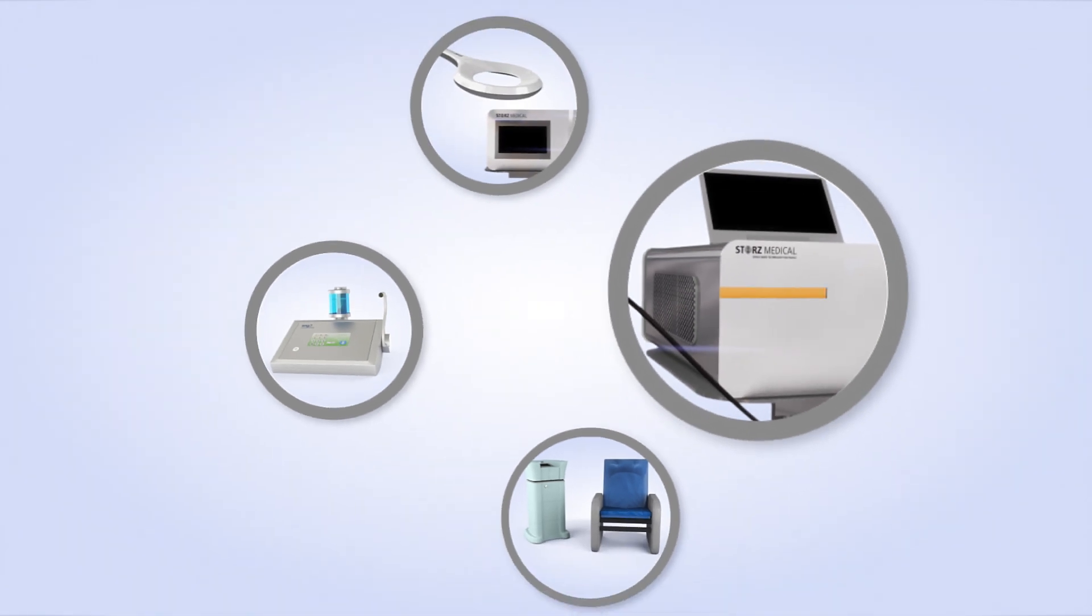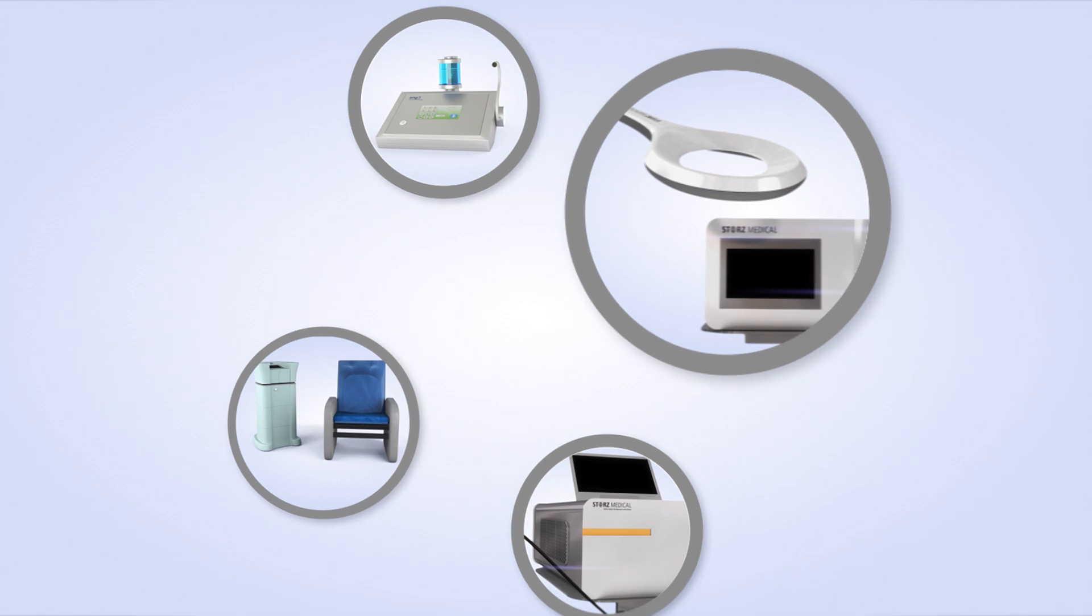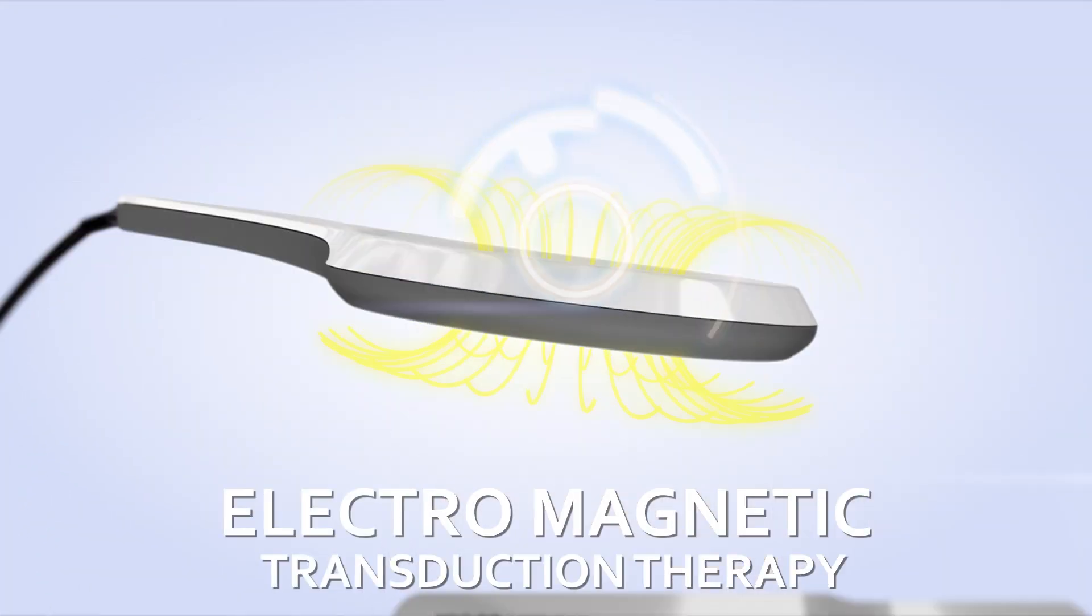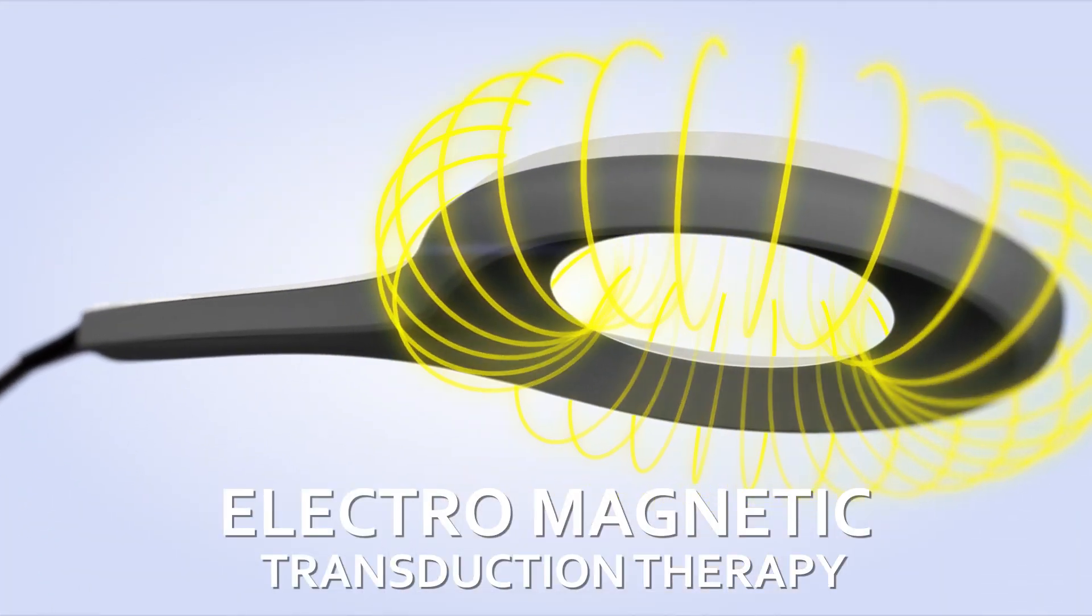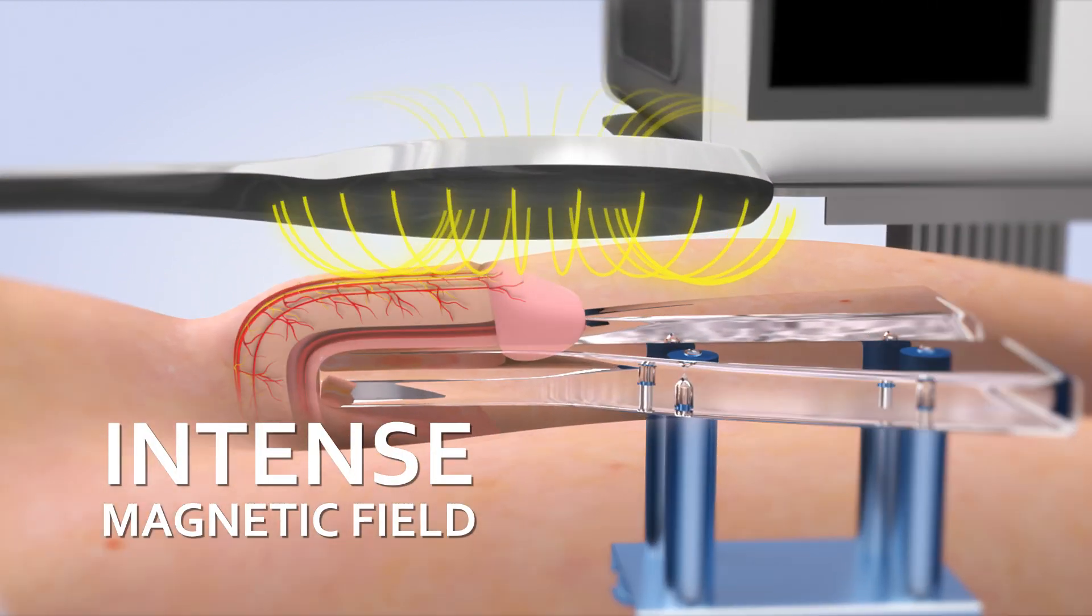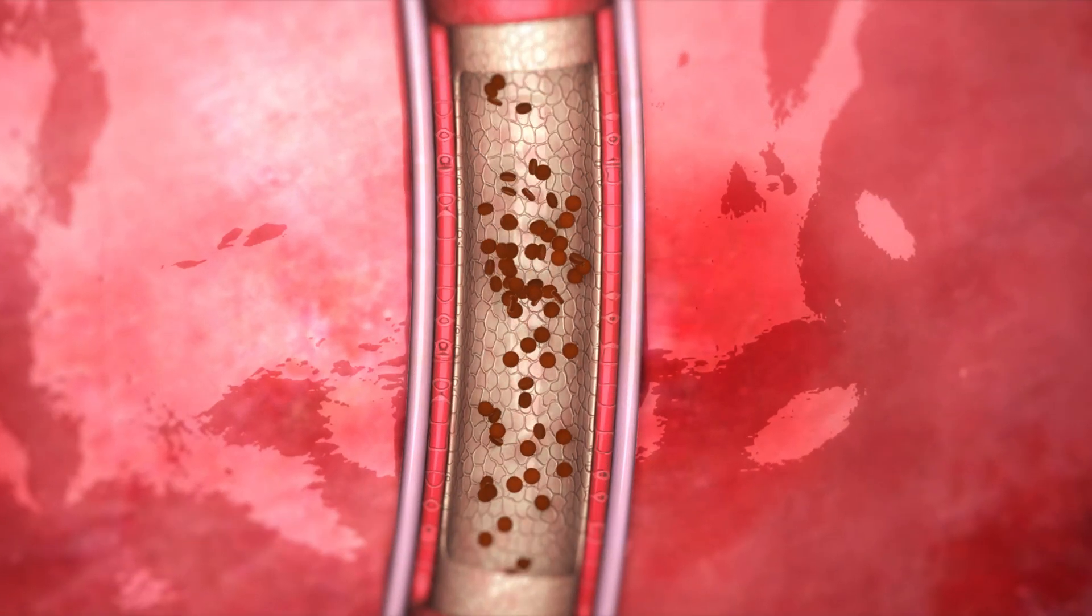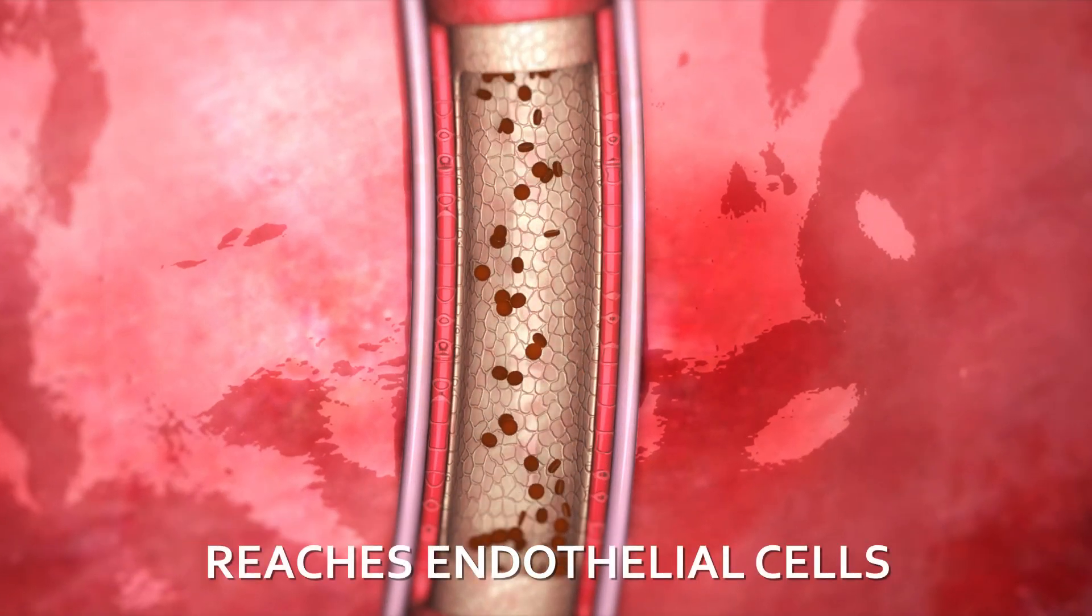Extracorporeal focused shockwave therapy is enhanced with new state-of-the-art inventions. Electromagnetic transduction therapy works on a microscopic cell level. It creates an intense magnetic field within the penis, which enters millions of erection-boosting blood vessels, reaching the endothelial cells lining each blood vessel.